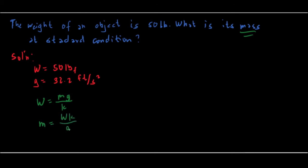So we will substitute the given. Our weight is 50 pound force times our k, so our k is equal to 32.2 pound mass feet over pound force second squared.